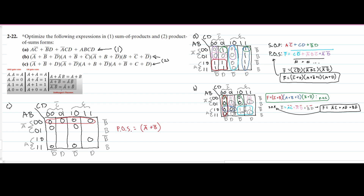Next we look at the other groups. We can't use A0 because they're in different A rows, and we can't use A either. We can use B because they're both in the B rows, so we'll have B plus D0 for the same reason. Then for the remaining zero, we pair it with the one above. We can't use A because they're in separate A's, but we can use B since it spans this B and this B0. So we'll have B0 plus C plus D. That is the optimized product of sums form.